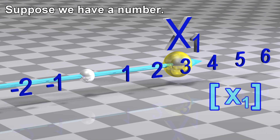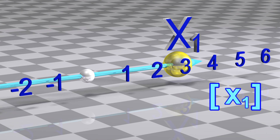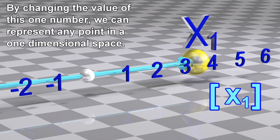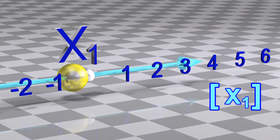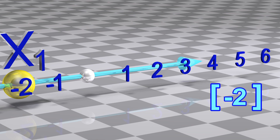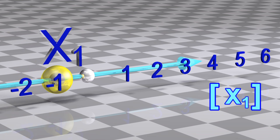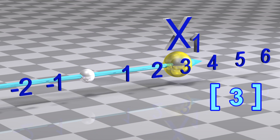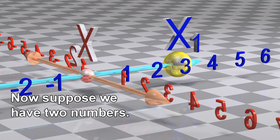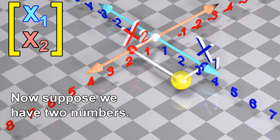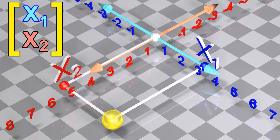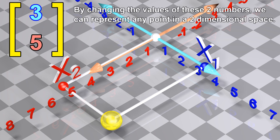Suppose we have a number. By changing the value of this one number, we can represent any point in a one-dimensional space. Now suppose we have two numbers. By changing the values of these two numbers, we can represent any point in a two-dimensional space.